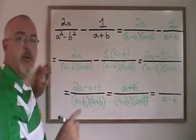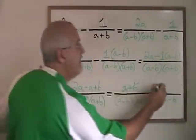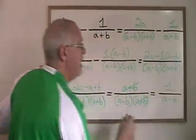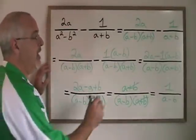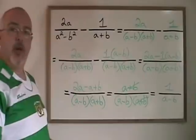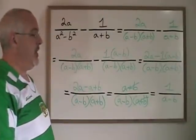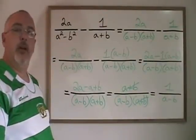There's nothing left in the numerator. That's not true. There is a 1 left in the numerator because a plus b divided by a plus b is equal to 1. Be careful. Our final answer to this subtraction of two algebraic fractions is therefore 1 over a minus b.